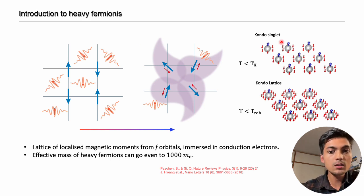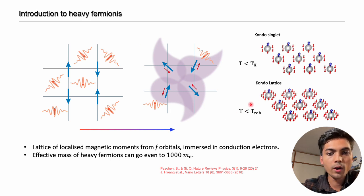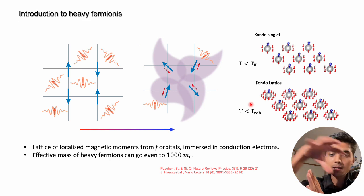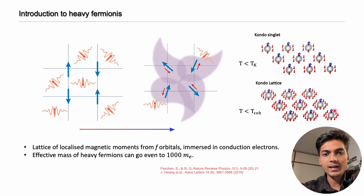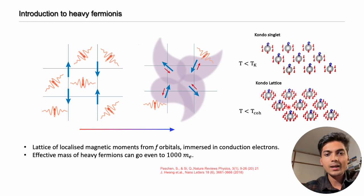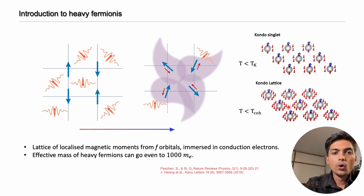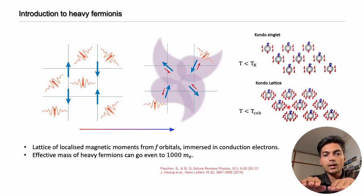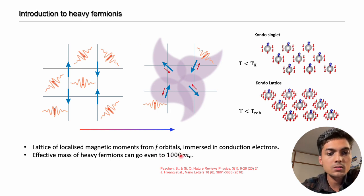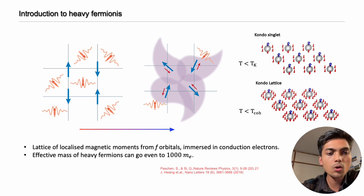At the Kondo singlet state, some electrons can still scatter. Now you reduce the temperature further to a state called the coherent temperature, where the magnetic moments are completely screened by the conduction electrons, forming a Kondo lattice. The quasi-particles — approximate particles formed from the conduction electrons and magnetic moments — have a reduced Fermi velocity, meaning they are in a strongly correlated state. This increases the effective mass of the quasi-particle, up to a thousand times that of the free electron, which is why these are called heavy fermions.